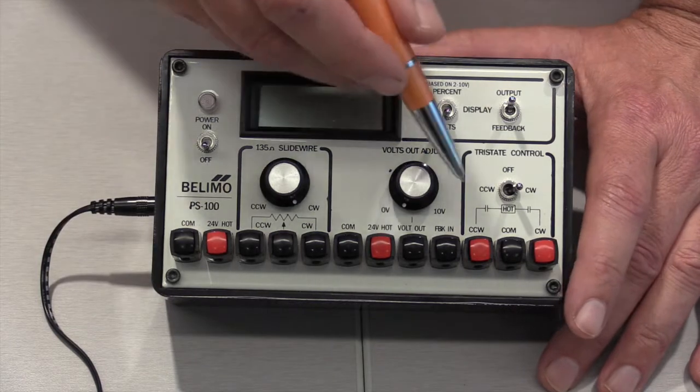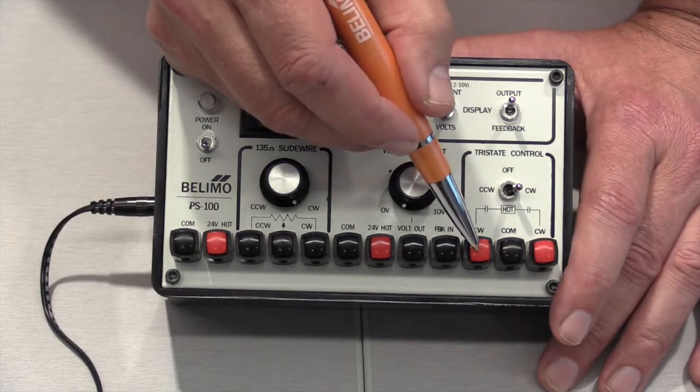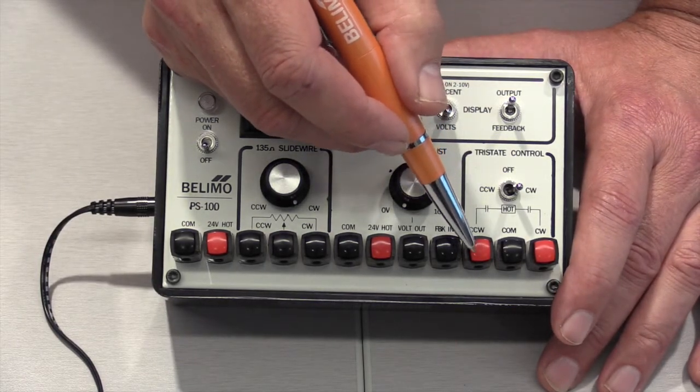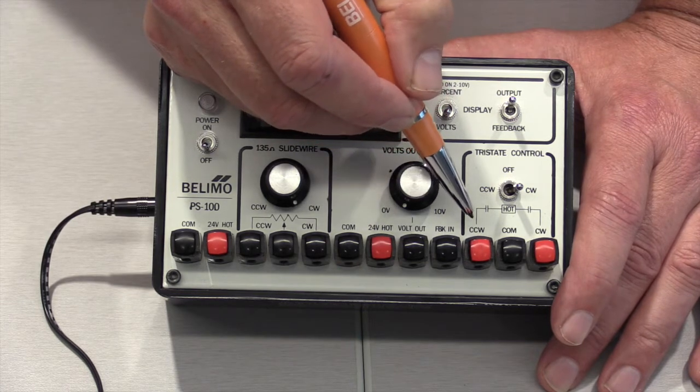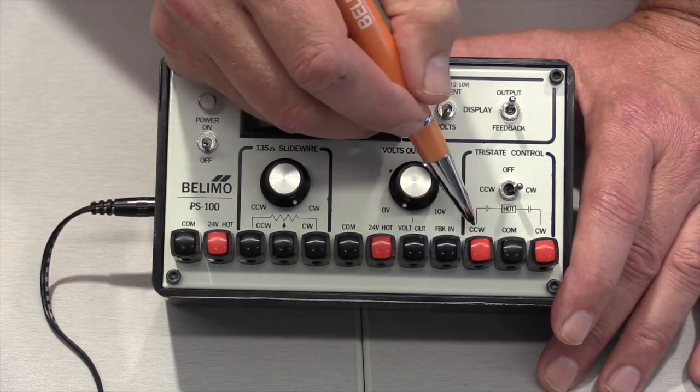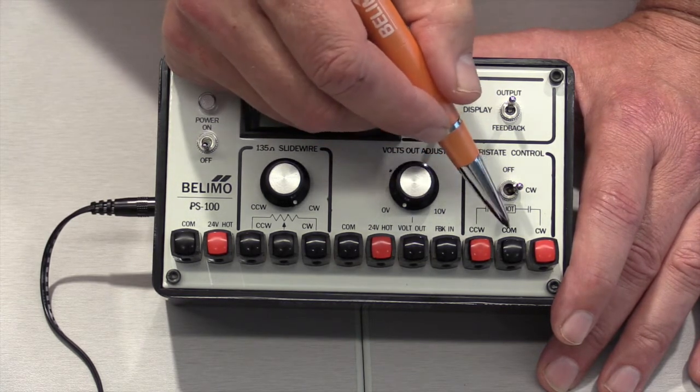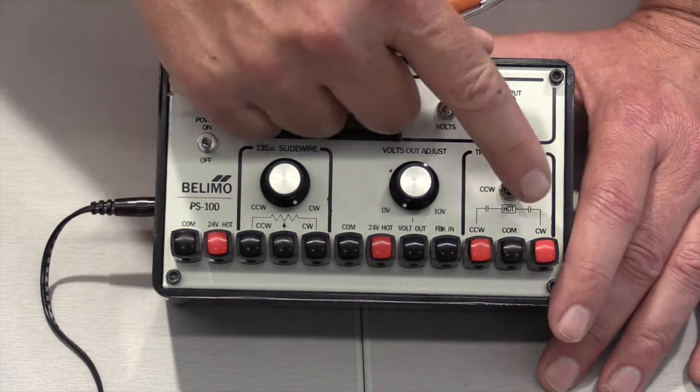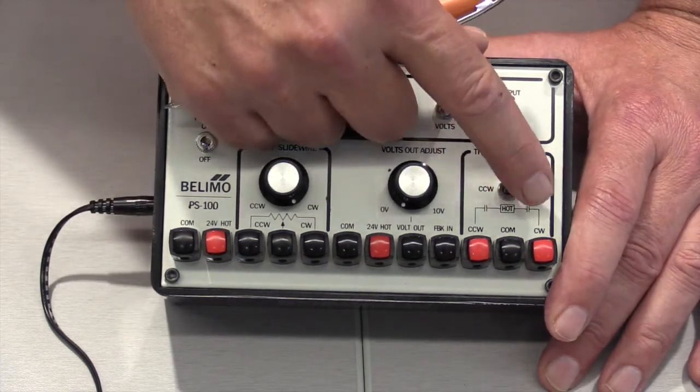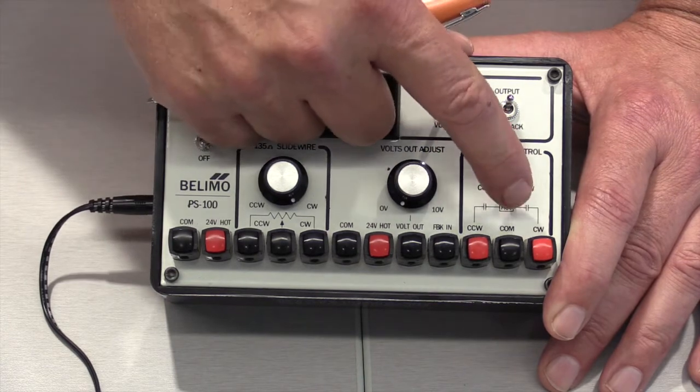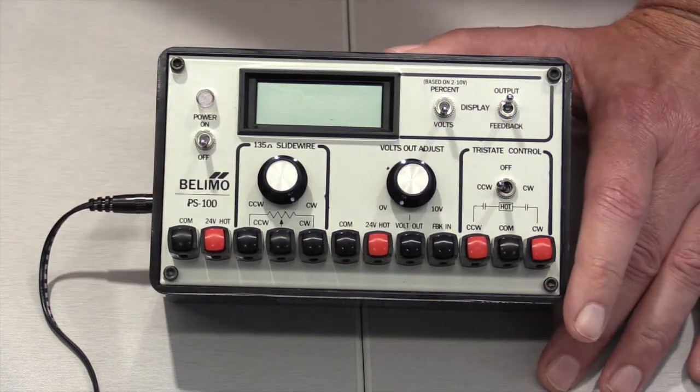What we have on the end here is tri-state or floating point control. Very similar to the first one, we have counterclockwise, common, and clockwise, and we have a little selector switch. It's on clockwise. I can turn it off completely or I can turn it to counterclockwise like that.